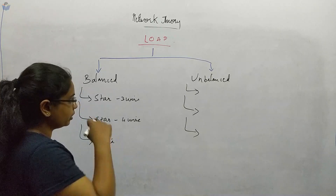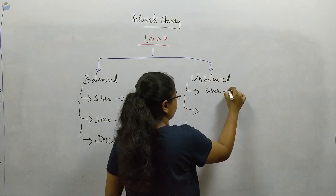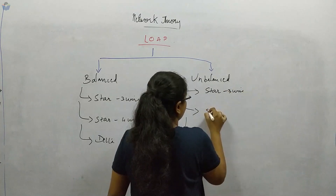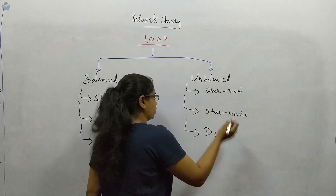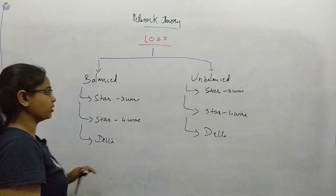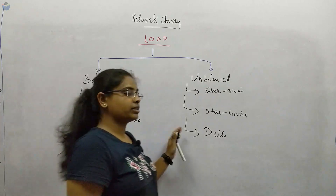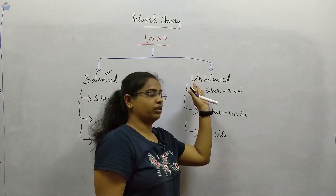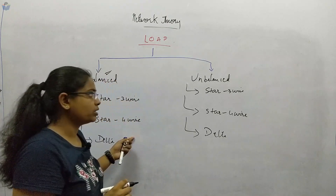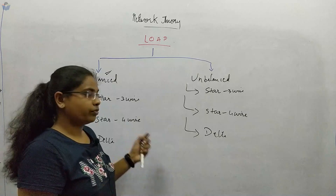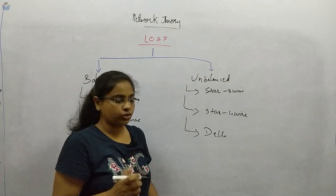The same three subcategories apply for the unbalanced case: star three-wire system, star four-wire system, and delta connection. In most cases it will be balanced, but to answer questions in the GATE exam, we will study even the unbalanced system. We will see small derivations related to these — how they work, the formulas — and it will be very helpful to solve questions easily.